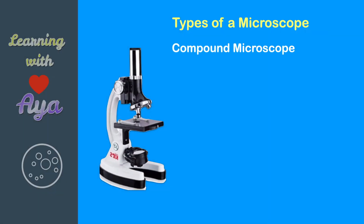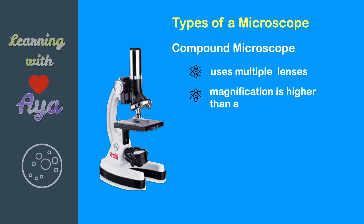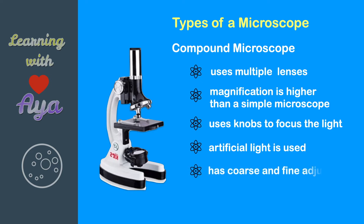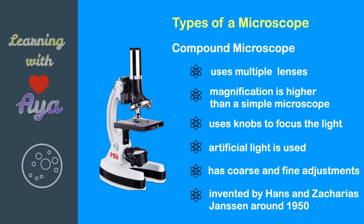Compound microscope: uses multiple lenses, magnification is higher than a simple microscope, uses knobs to focus the light, and artificial light is used. It has coarse and fine adjustments. Invented by Hans and Zacharias Janssen around 1590.